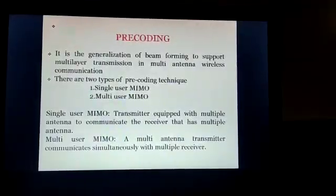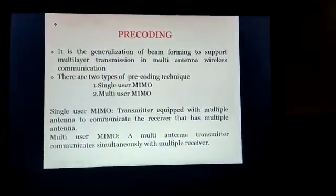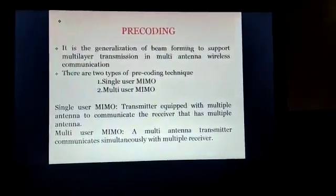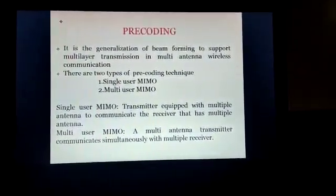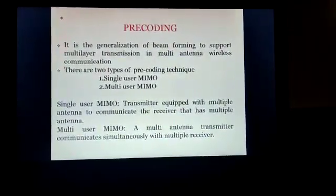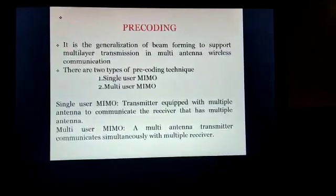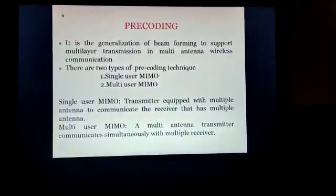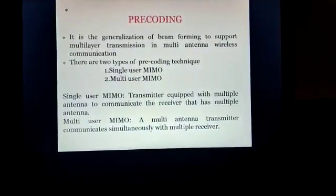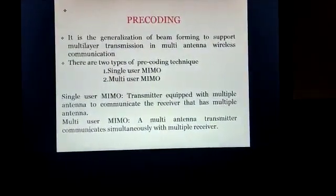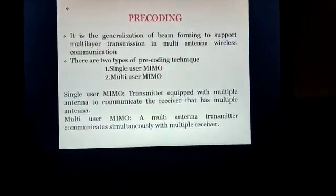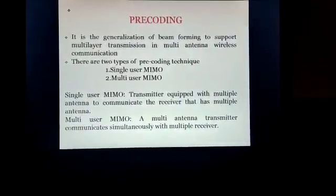Pre-coding is a generalization of beamforming to support multi-layer transmission in multi-antenna wireless communication. There are two types of pre-coding techniques: number one is single-user MIMO, where a transmitter equipped with multiple antennas communicates with a receiver that has multiple antennas; and number two is multi-user MIMO, where a multiple-antenna transmitter communicates simultaneously with multiple receivers.